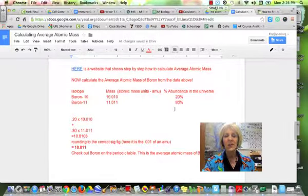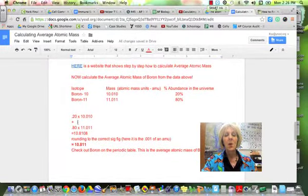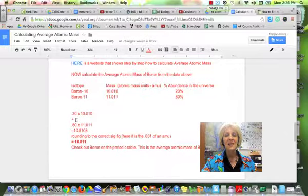So the math is very simple. I change the percent into a decimal. So 20% is 0.20, so you divide by 100. Multiply times the mass, and then add it to the other isotopes. So I take 0.80, and I got that from 80%, I just change it to a decimal, times the mass of that isotope, and I get the number 10.8108.